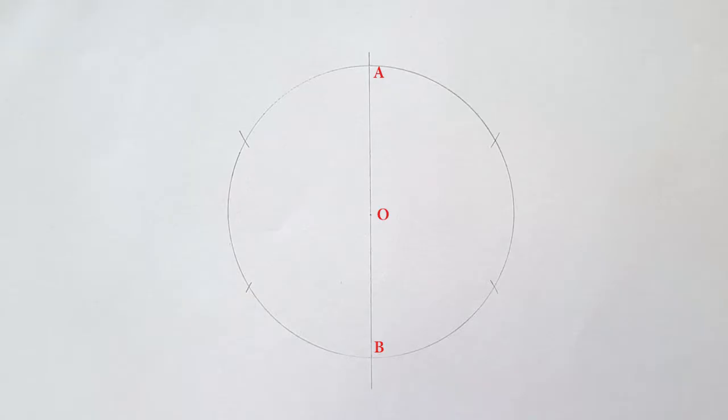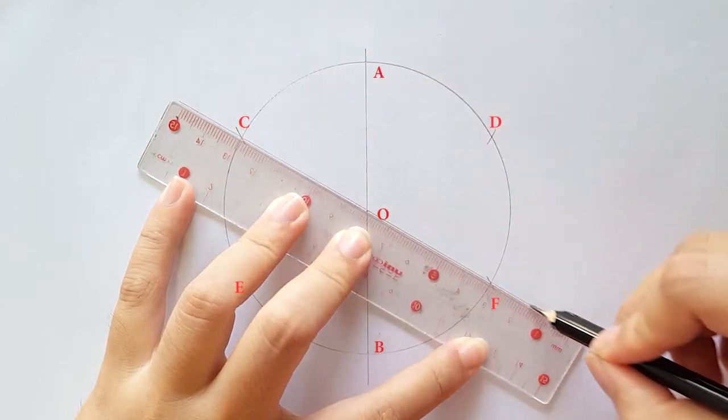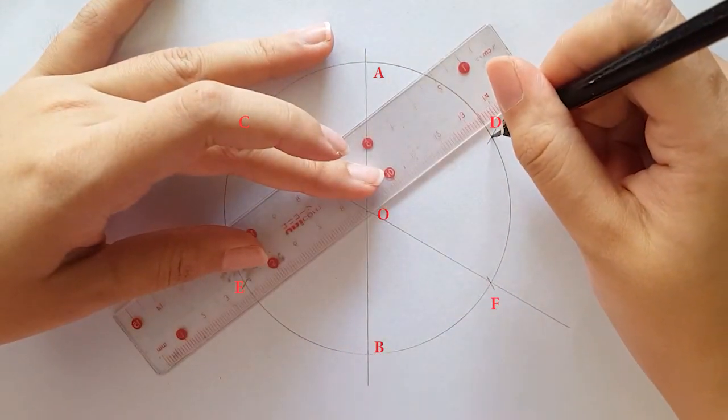These points are called C, D, E and F. Then, draw a diameter line at point FOC and EOD.